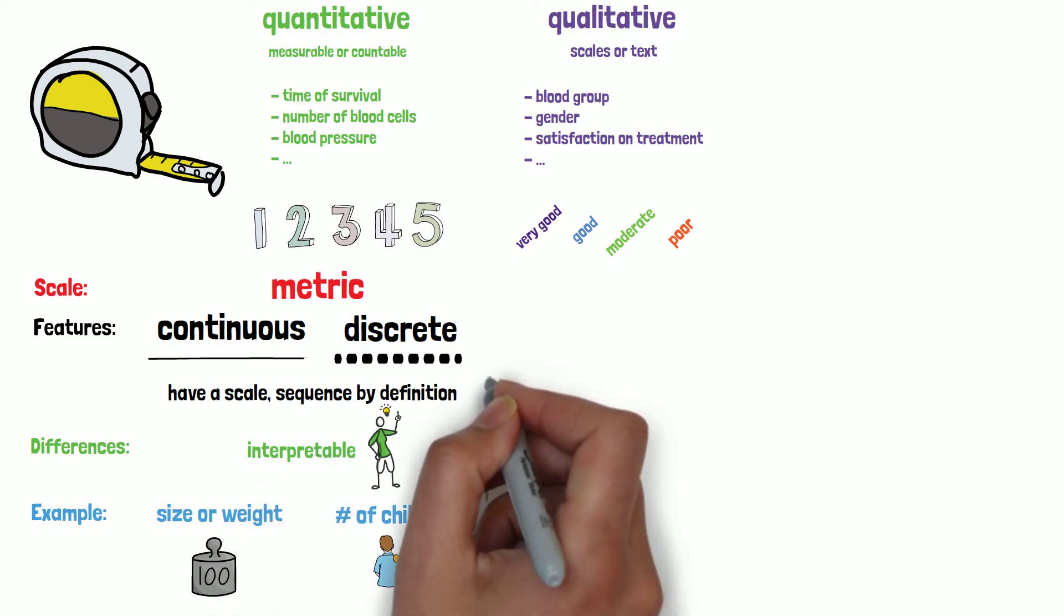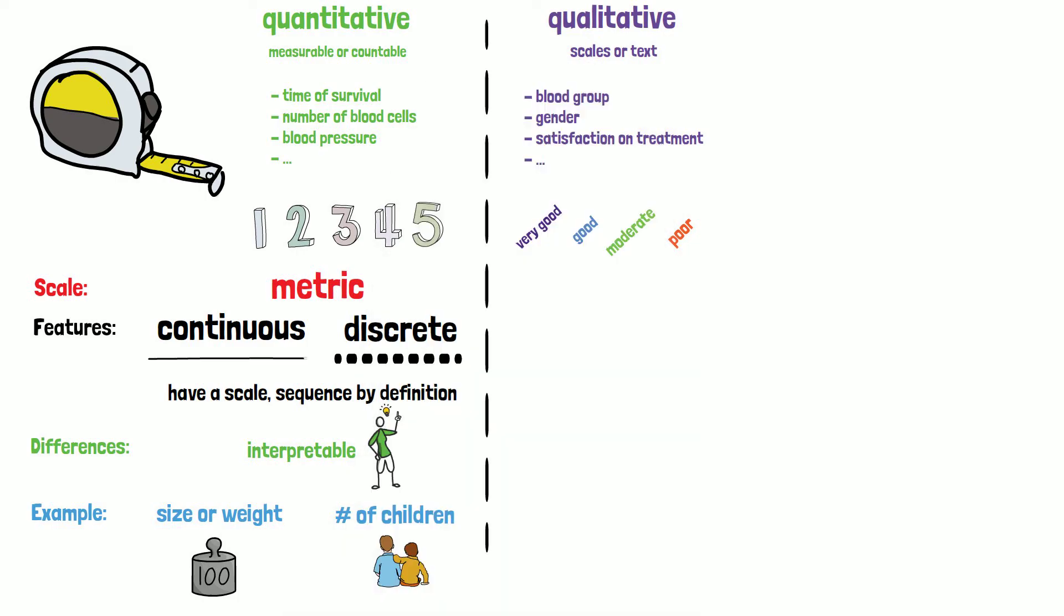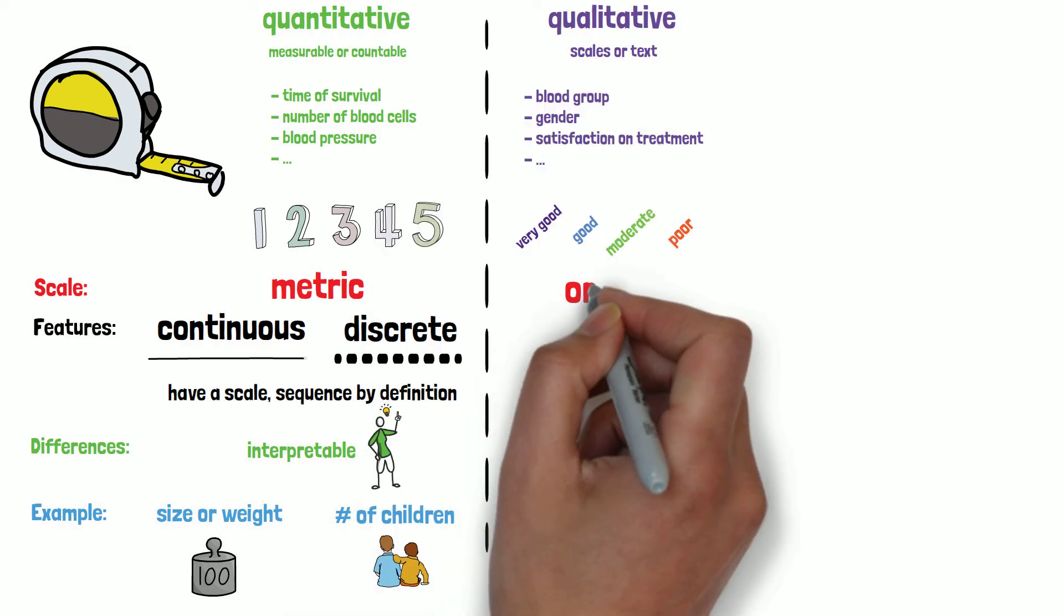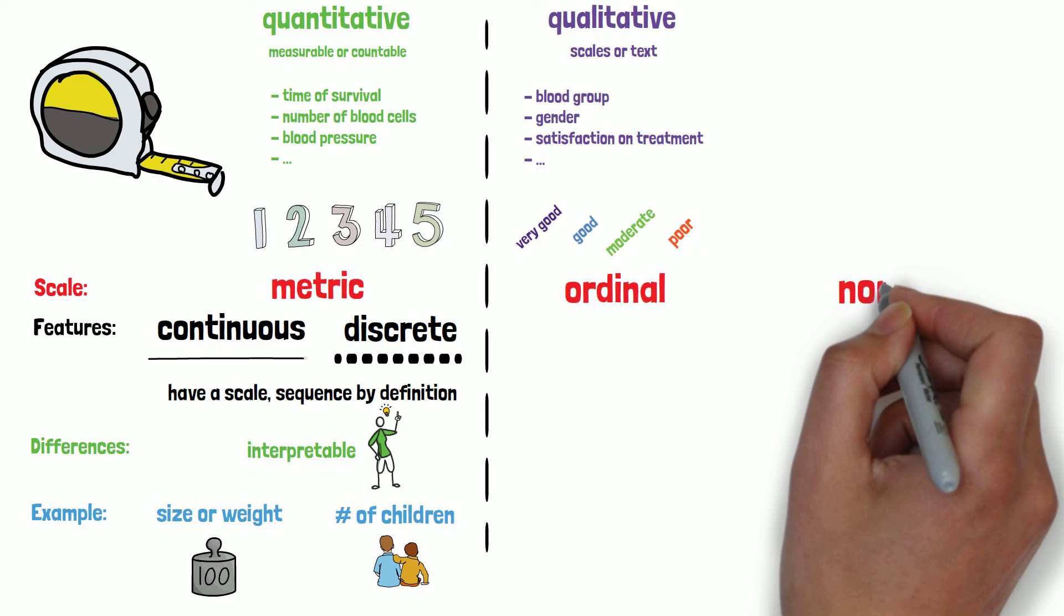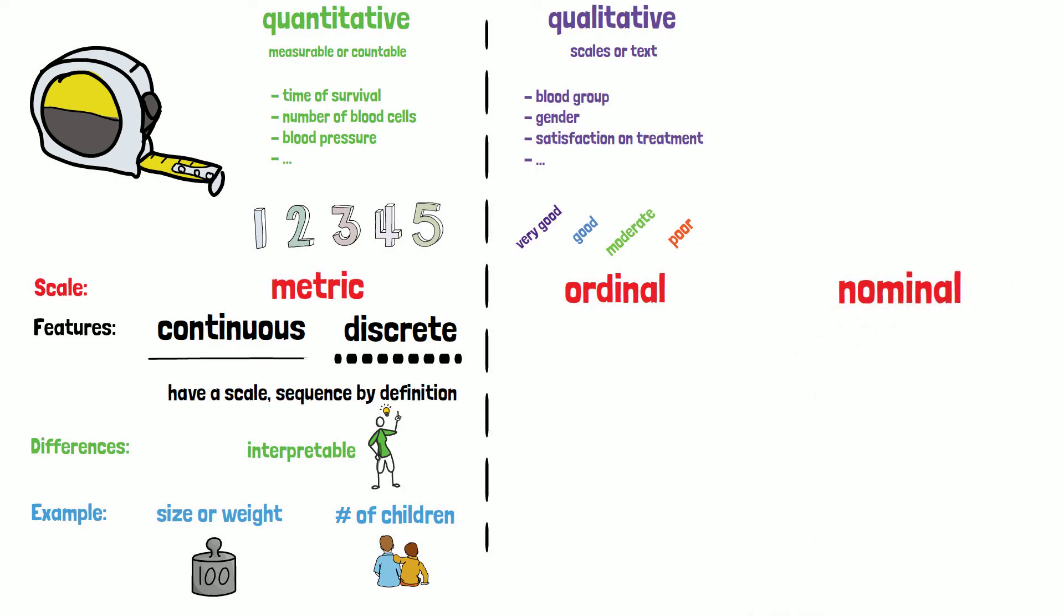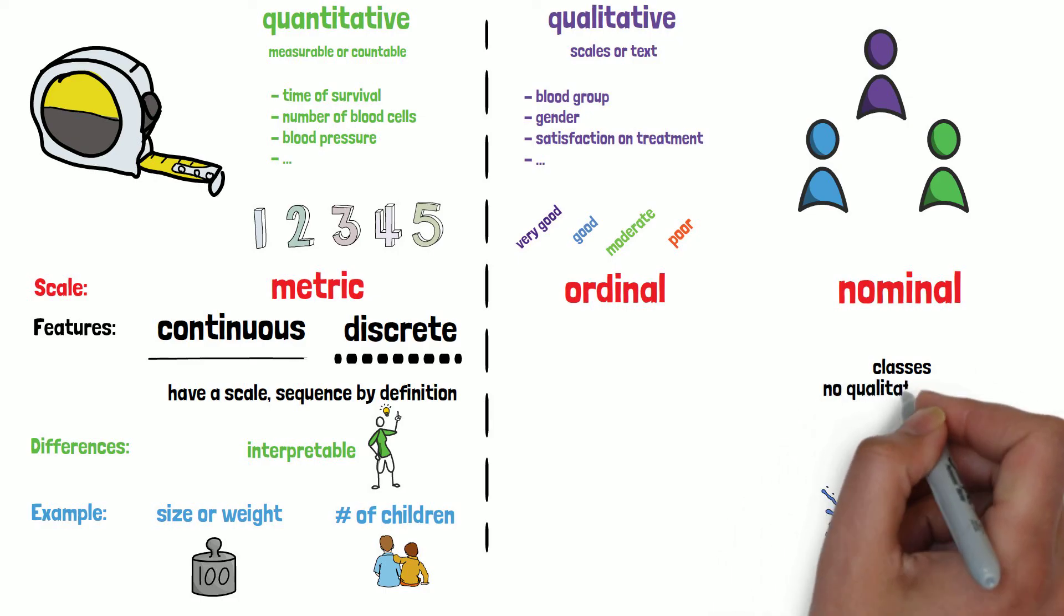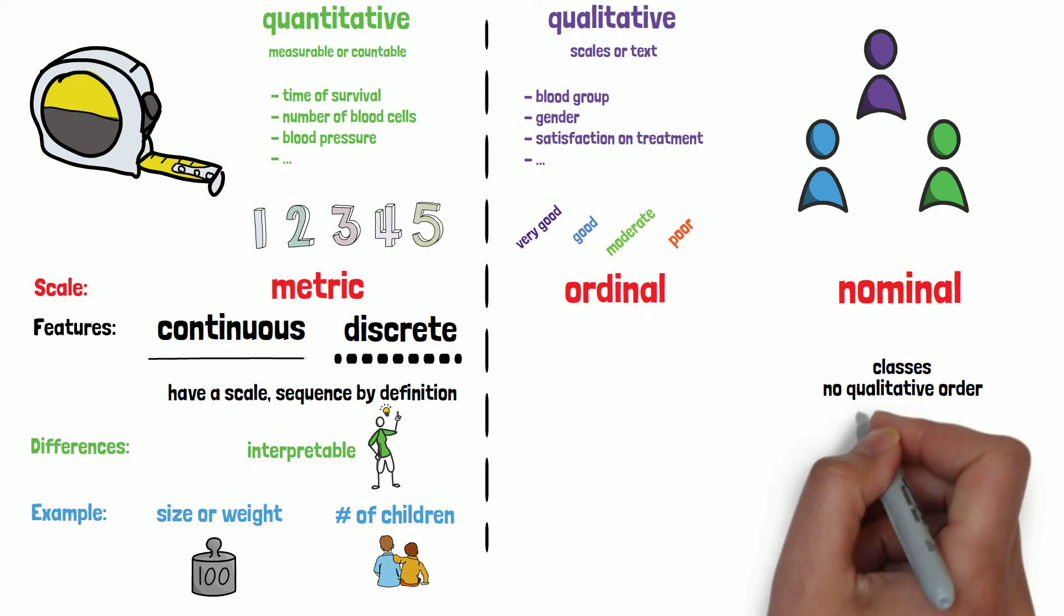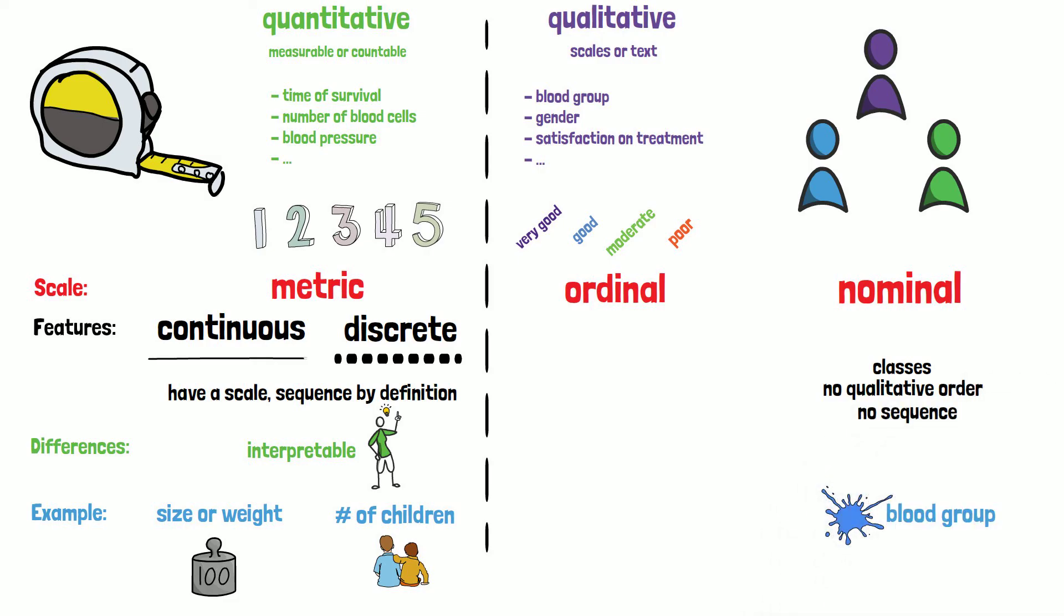Qualitative variables in contrast to metrically scaled quantitative variables are distinguished in nominal and ordinal scaled variables. Nominal variables contain data in classes, such as the blood group, that does not have a qualitative order. Therefore, they have no sequence and distances between two classes are not interpretable, since they have no qualitative meaning.